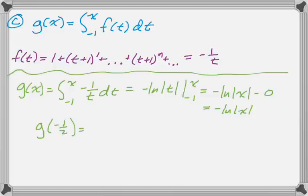And then we're asked to find g of negative 1 half, which is negative natural log of the absolute value of negative 1 half, which is negative natural log of 1 half, or if you're really into logs, just the natural log of 2.